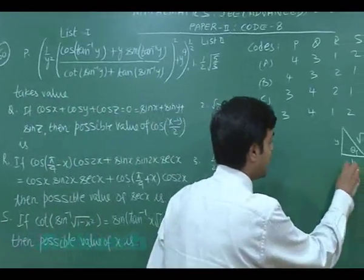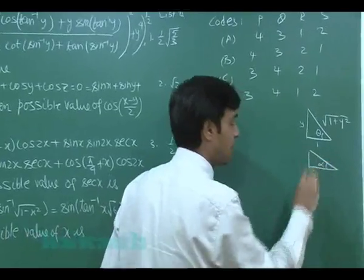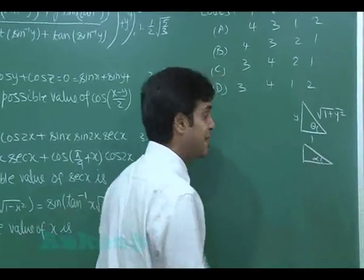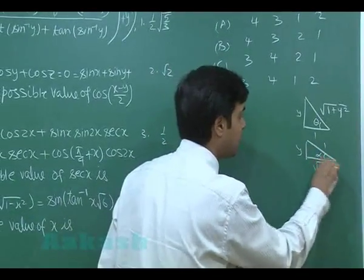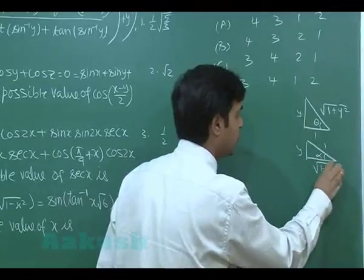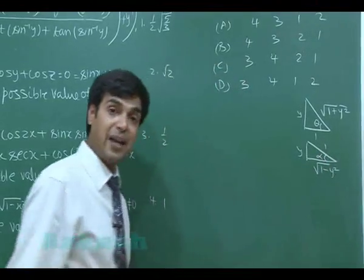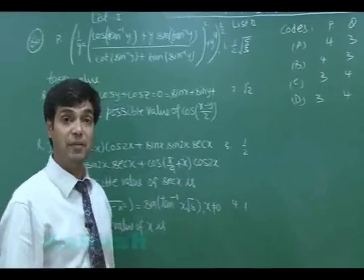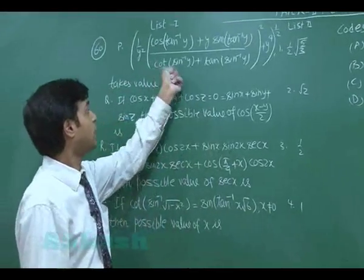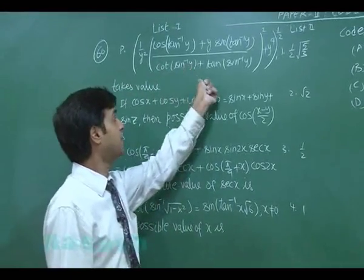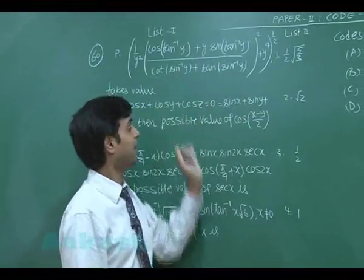For the denominator, let sin⁻¹y = α, so sin α = y/1, giving the triangle sides y and 1, with the third side √(1 − y²). From this we can find cot(sin⁻¹y) = √(1 − y²)/y and tan(sin⁻¹y) = y/√(1 − y²).